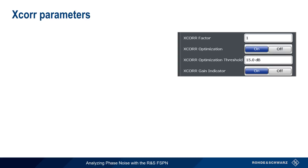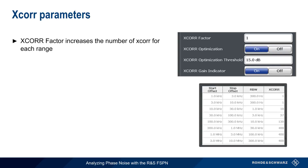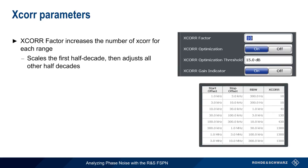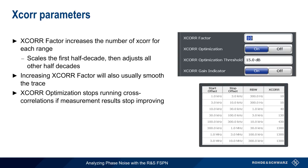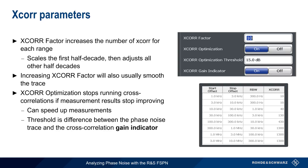Now let's look at the rest of the cross-correlation parameters. Cross-correlation factor increases the number of cross-correlations for each range. Here are the counts for each half-decade with cross-correlation factor set to 1. If we increase this factor to 10, then the first half-decade count is multiplied by 10, and the other half-decades are scaled appropriately. Note that increasing the number of cross-correlations also usually smooths the trace. Another important configuration parameter is cross-correlation optimization, which stops running cross-correlations when measurement results stop improving. This can speed up measurements. An improvement is defined as the threshold value, which is the difference or distance between the phase noise trace and the cross-correlation gain indicator.